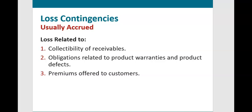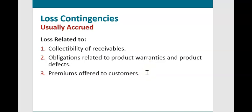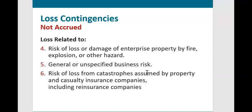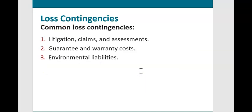Examples of loss contingencies that are usually accrued include losses related to collectability of receivables, obligations related to product warranties, and premiums offered to customers — such as a 5% cash back rebate. Loss contingencies typically not accrued include risk of loss from fire, explosion, other hazards, and general unspecified business risks. Common loss contingencies include lawsuits, guarantees and warranties, and environmental liabilities.